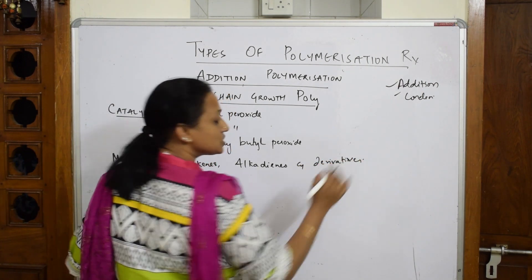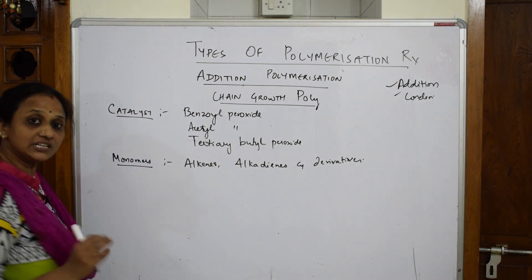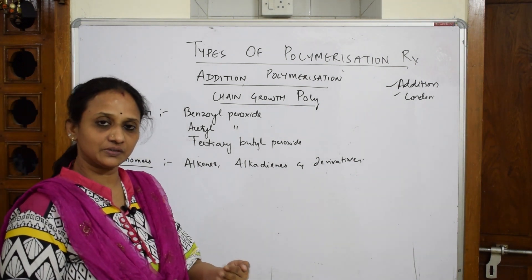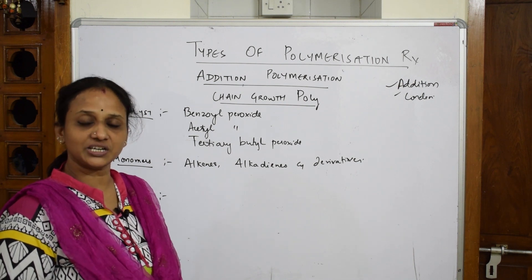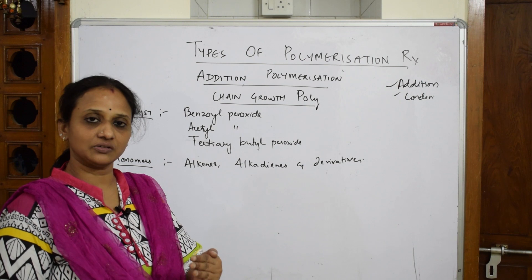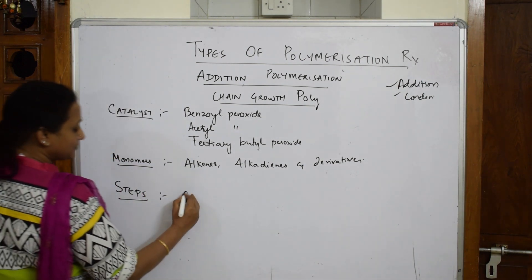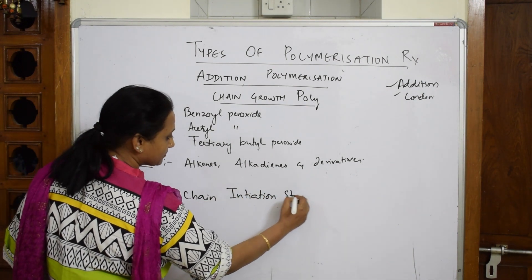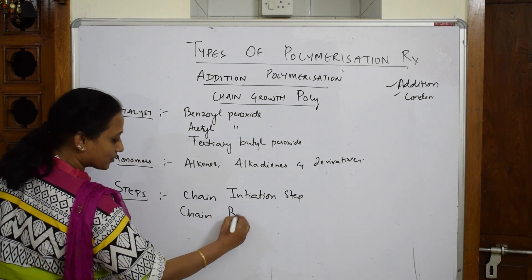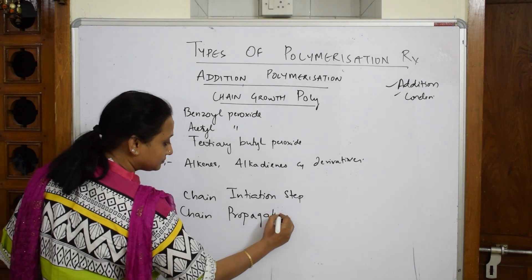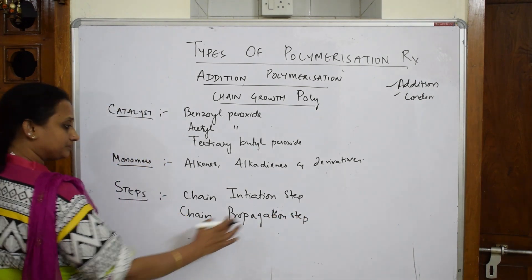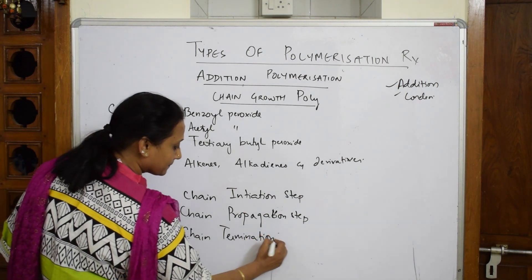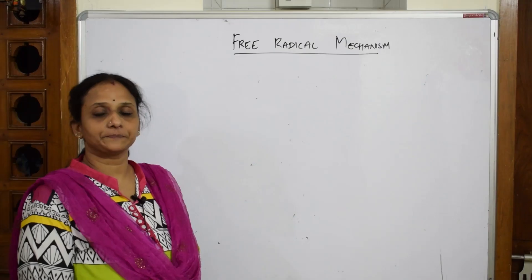Addition polymerization follows three steps. First is the chain initiation step - formation of a free radical. Second is the chain propagation step - increase in chain length. Third is the chain termination step, where the reaction terminates and forms a complete polymer.